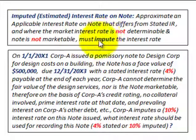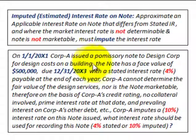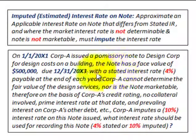The note has a stated rate of interest, but there's a real interest rate that this note actually has, and that's what you have to impute. For example, on 1/1/20X1, Corporation A issued a promissory note to a design company for design costs on a building. They're going to pay for these design costs by issuing a note with a face value of $500,000, due on 12/31/X3 — three years after its issue date — with a stated interest rate of 4% payable at the end of each year.